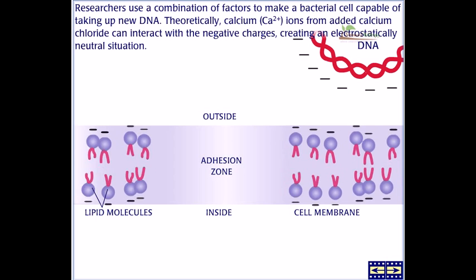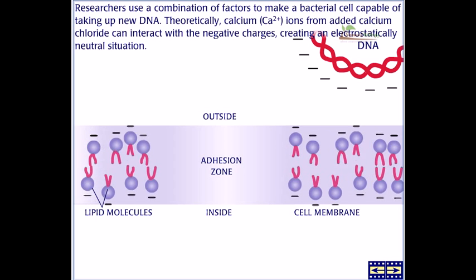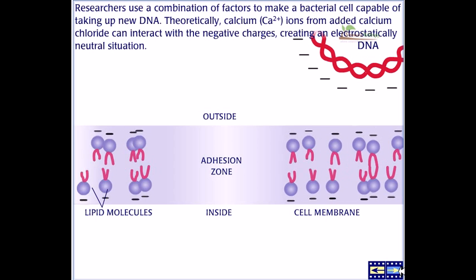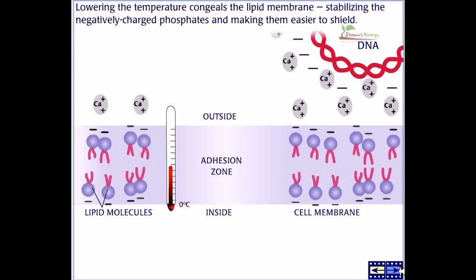Theoretically, calcium ions (Ca2+) from added calcium chloride can interact with the negatively charged DNA, creating an electrostatically neutral situation. If we add calcium, it will bind with this and create this situation.